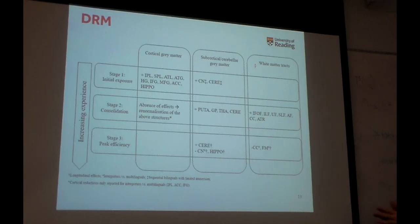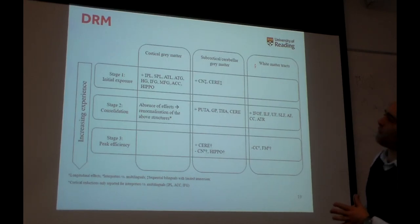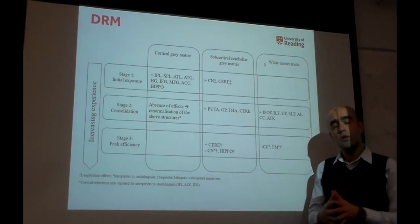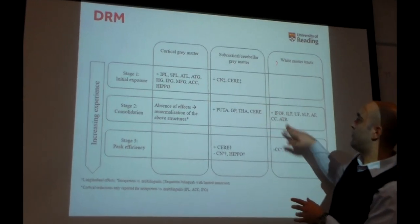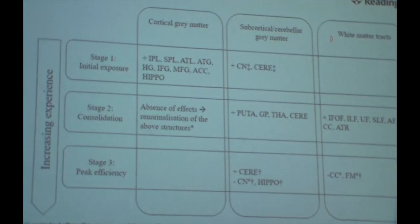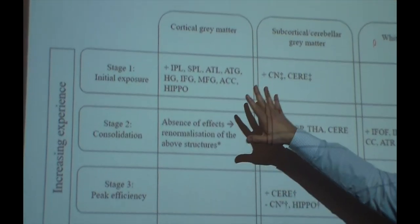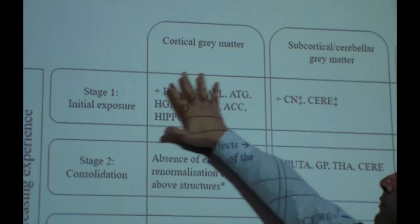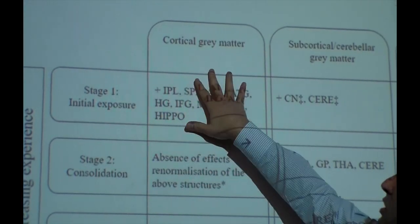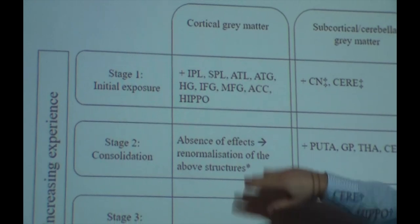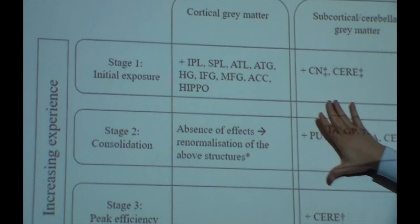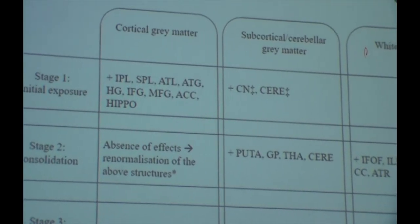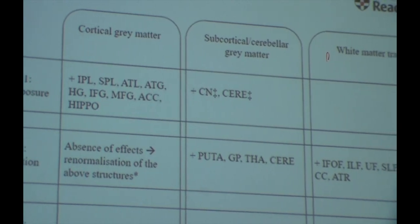This is just a schematic representation of the model showing the same information with the regions affected in more detail. You start from cortical regions at initial exposure, and the more experienced you become, the effects gradually move towards subcortical structures and the white matter.